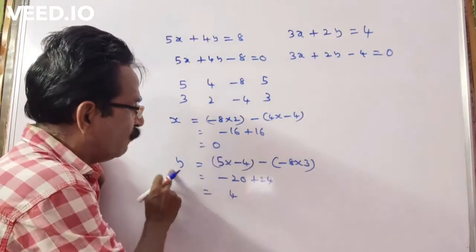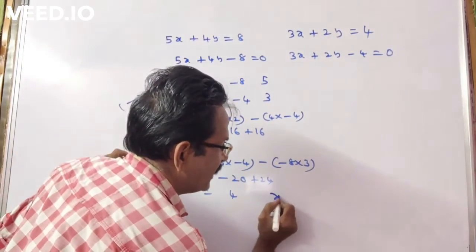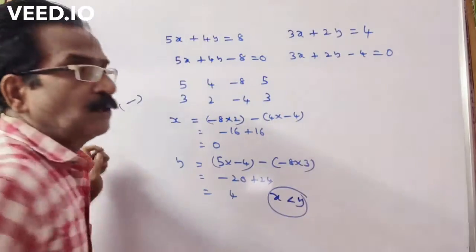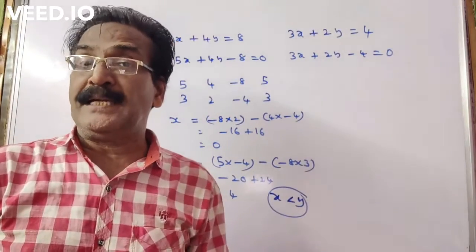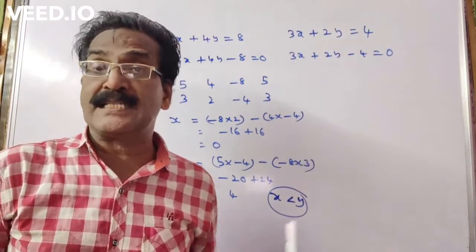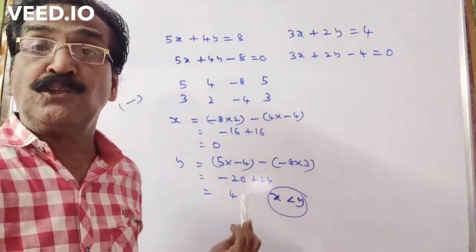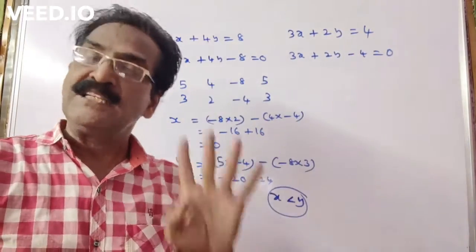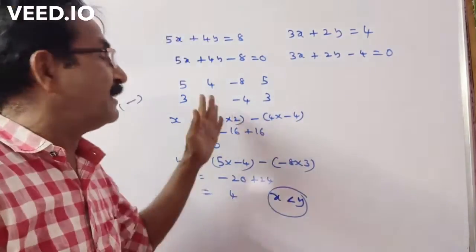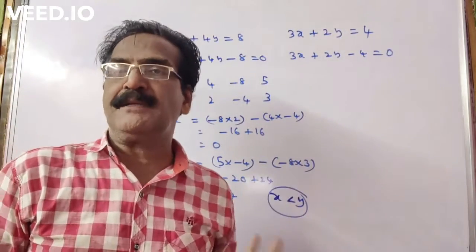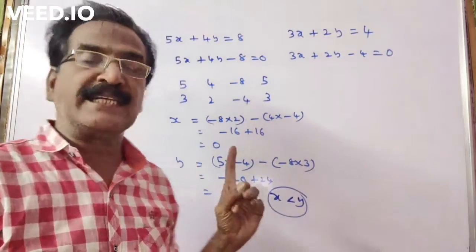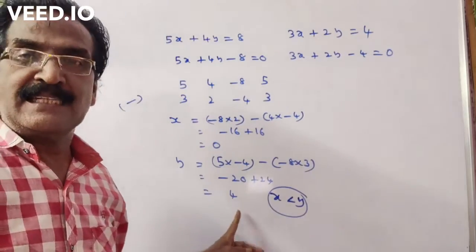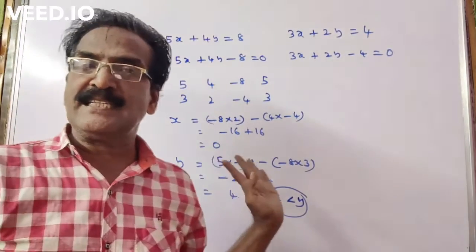So x is equal to 0 and y is equal to 4. Then the relation is x less than y. These are not the exact values of x and y; the actual values are something else. But for the purpose of establishing the relation between x and y, we consider x and y values like this. The answer is x less than y.